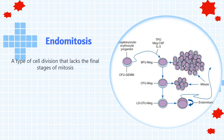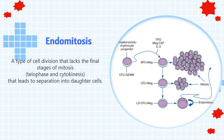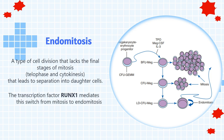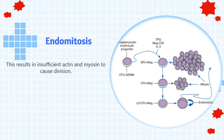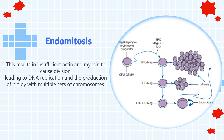Endomitosis is a type of cell division that lacks the final stages of mitosis — telophase and cytokinesis — that leads to separation into daughter cells. The transcription factor RUNX1 mediates this switch from mitosis to endomitosis by suppressing the Rho/Roc signaling pathway, which normally triggers the separation of daughter cells. This results in insufficient actin and myosin to cause division, leading to DNA replication and the production of ploidy with multiple sets of chromosomes.